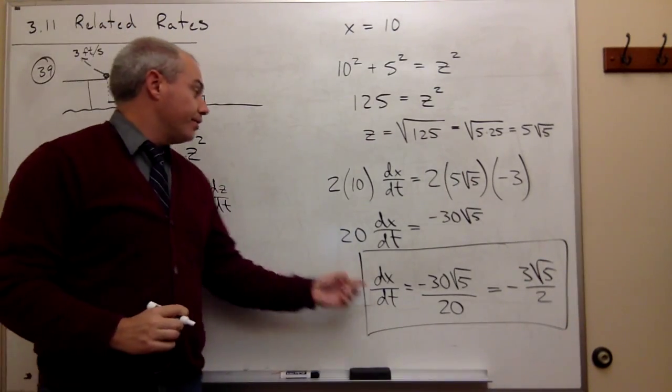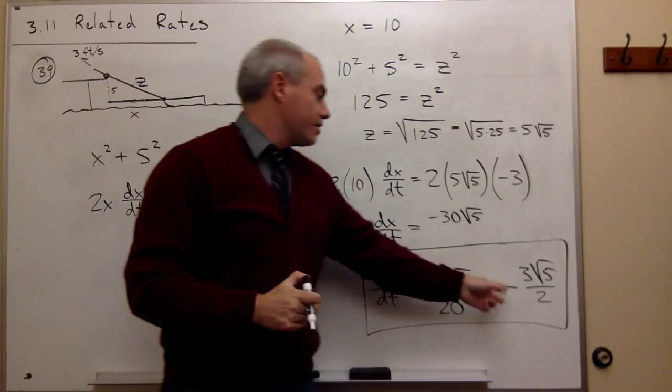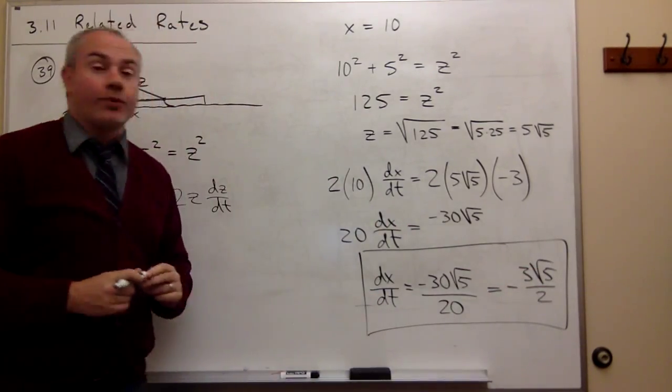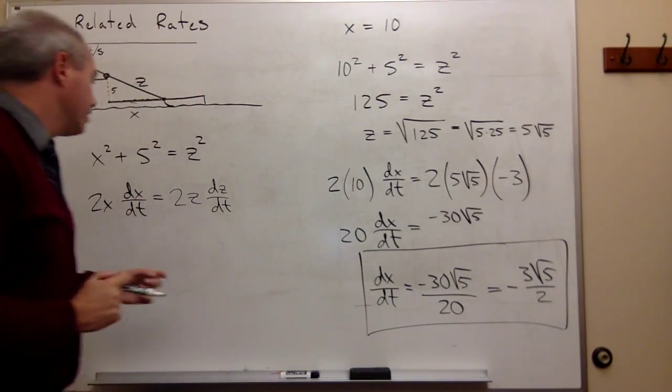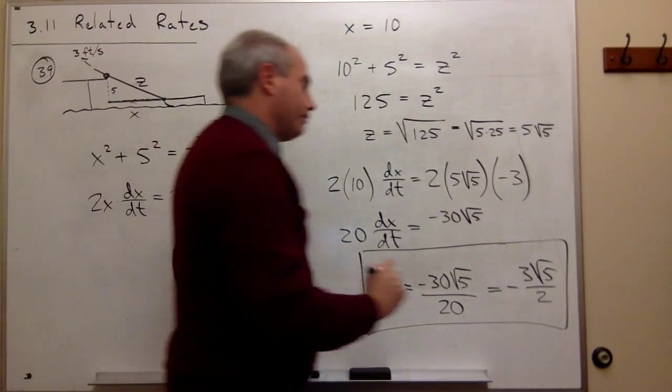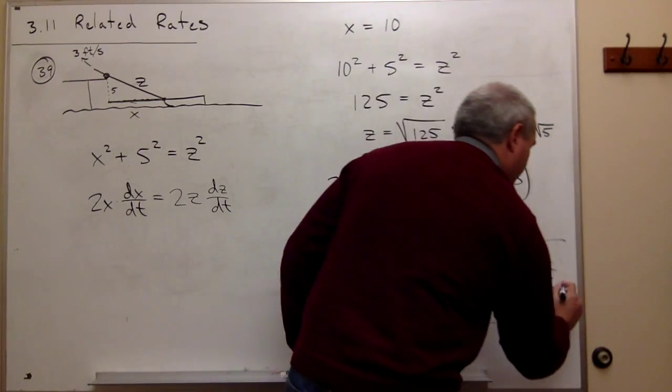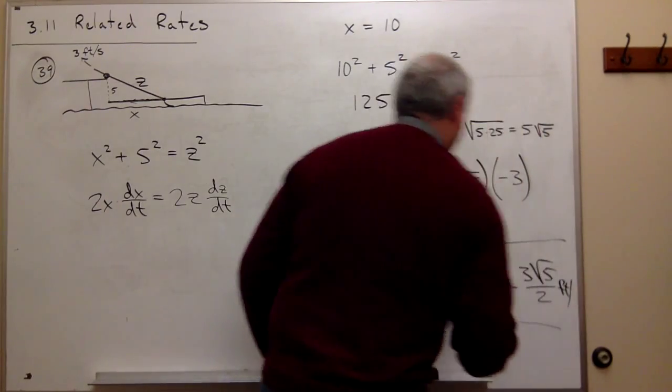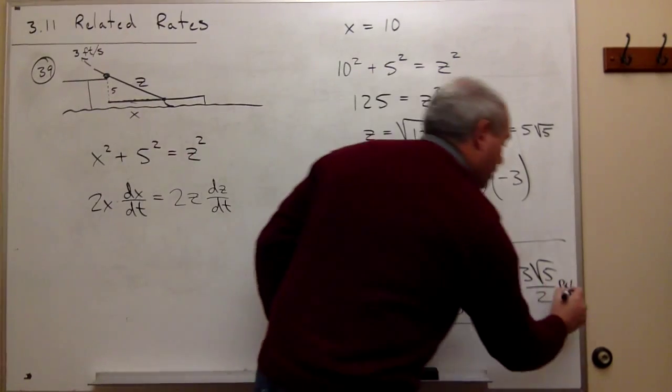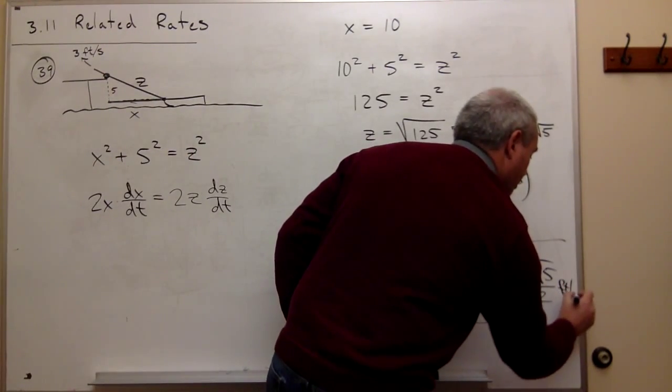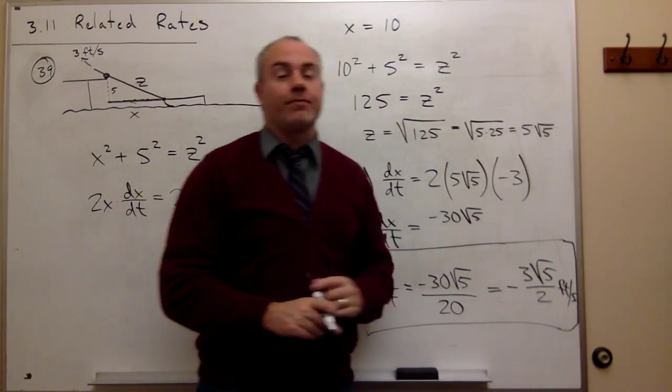So the rate at which the boat is approaching the dock is -3√5/2. If we were to put units on that, x is being measured in feet in this problem, and time is being measured in seconds. So our answer is -3√5/2 feet per second.